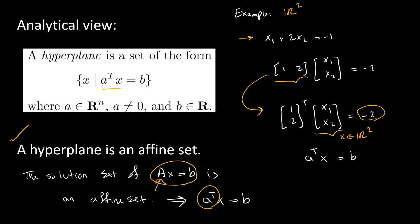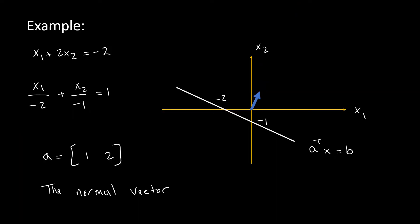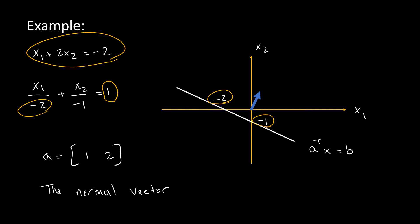Before going to the geometrical meaning, let's graph the previous example: x1 plus 2x2 equals negative 2. We can always make the right-hand side 1 by dividing through, so we get x1 over negative 2 plus x2 over negative 1. Negative 2 is on the x1-axis (denominator of x1) and negative 1 is on the x2-axis (denominator of x2).